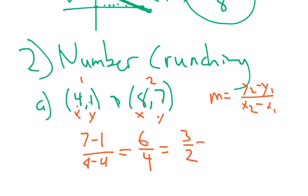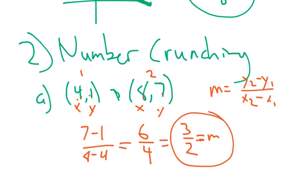You'll want to reduce the fraction if you can. This is essentially finger math but with number crunching — if you saw these points on a coordinate plane you could count it out, but since we're just given raw points, we have to crunch the numbers.